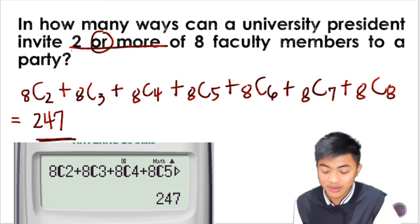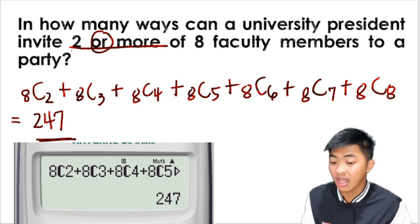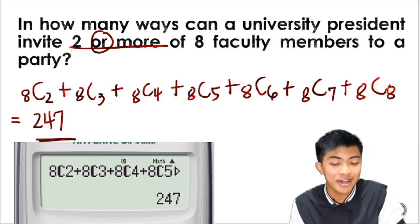So there are 247 ways in which the president can invite 2 or more of the 8 faculty members to his party. So there you have it guys. That's how we solve combination problems. If the problem involves a lot of parts, you don't need to substitute it in the formula, you can directly input it in your calculator. I hope your teacher allows calculator. I hope you learned something. Don't forget to click the subscribe button. See you guys in the next video. Bye bye!